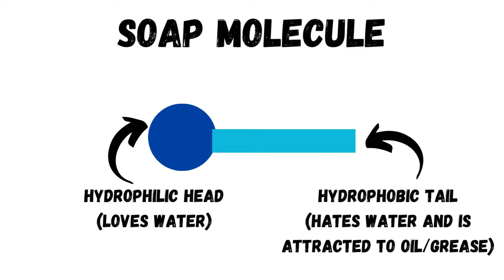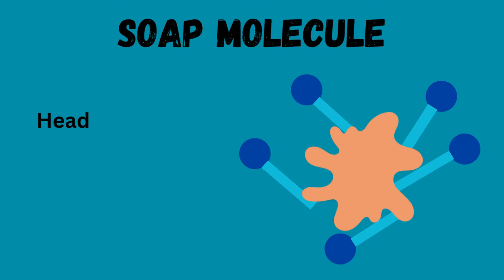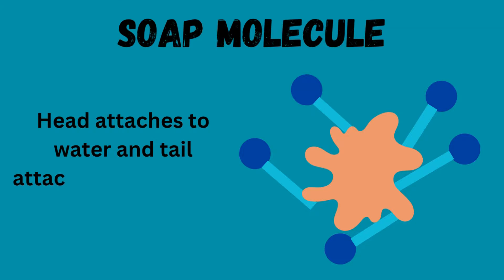Well, how does this work? How is soap able to wash out all these things? It's all thanks to these molecules. The hydrophilic, or water-loving, head is attached to the water, so it always wants to be with the water at any time. But the hydrophobic tail of that soap molecule, which is the long part, loves grease and oil and is able to stick to the grease and oil very easily. It's even able to trap the microbes and all the little germs.